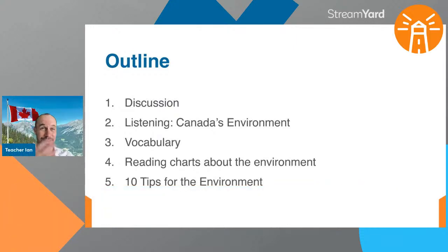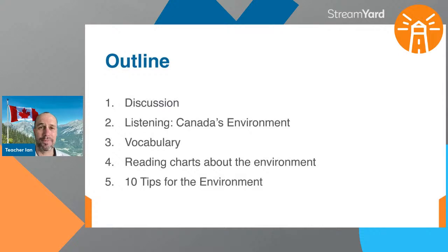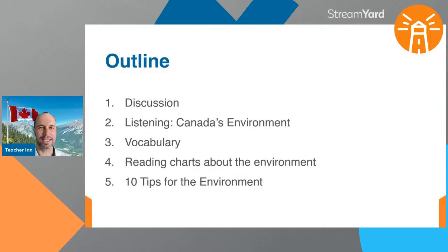We'll have a plan for tonight — five things we're going to do together. First is our discussion: we're going to talk a little bit about the environment. Two, we're going to have a listening activity — I'm going to read 10 sentences about Canada's environment, then ask you some questions. Number three, we're going to learn some vocabulary so we can better talk about and understand the environment. Then we're going to look at some charts, and finally share tips with each other about how to take care of the environment.